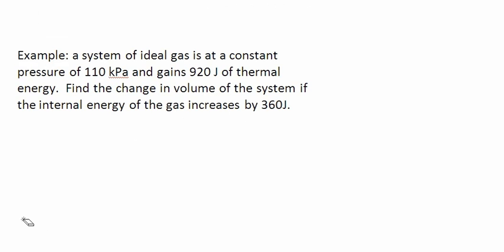Now let's look at an example. A system of ideal gas is at a constant pressure of 110 kPa and gains 920 joules of thermal energy. Find the change in volume of the system if the internal energy of the gas increases by 360 joules.